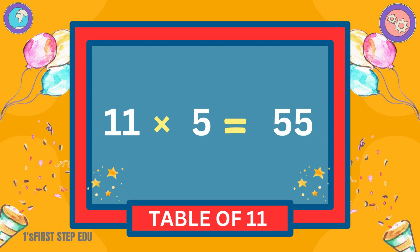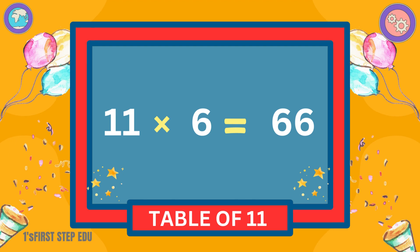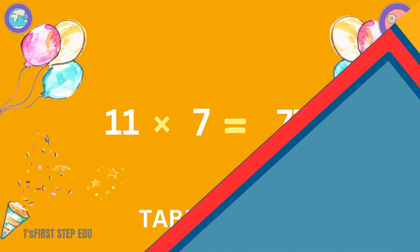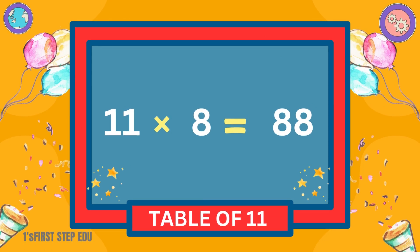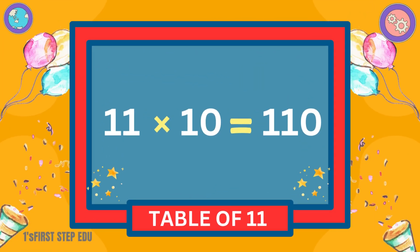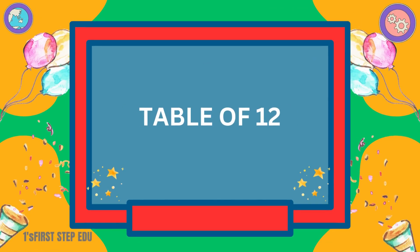11 sixes are 66. 11 sevens are 77. 11 eights are 88. 11 nines are 99. 11 tens are 110.